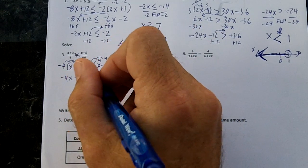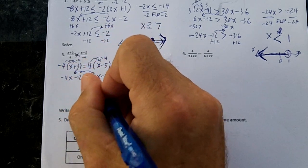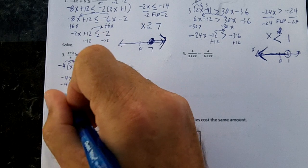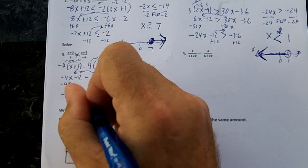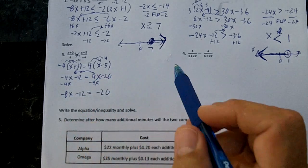Now then I'm going to move my x to the left, and I'm going to subtract 4x, subtract 4x. I'm going to end up with negative 8x minus 12 equals negative 20. I could have moved that negative 4x over here.